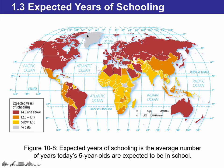Expected years of schooling refers to the average number of years that 5-year-olds are expected to spend in school. In the United States and Canada, it's 14 years and above. Places like Indonesia have a medium expected years of schooling, while places in Sub-Saharan Africa have the lowest expected years of schooling.